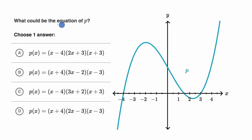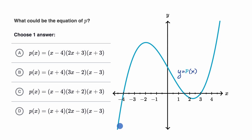We are asked: what could be the equation of p? We have the graph of our polynomial p right over here. You could view this as the graph of y is equal to p of x. Pause this video and see if you can figure that out. Now let's work on this together.